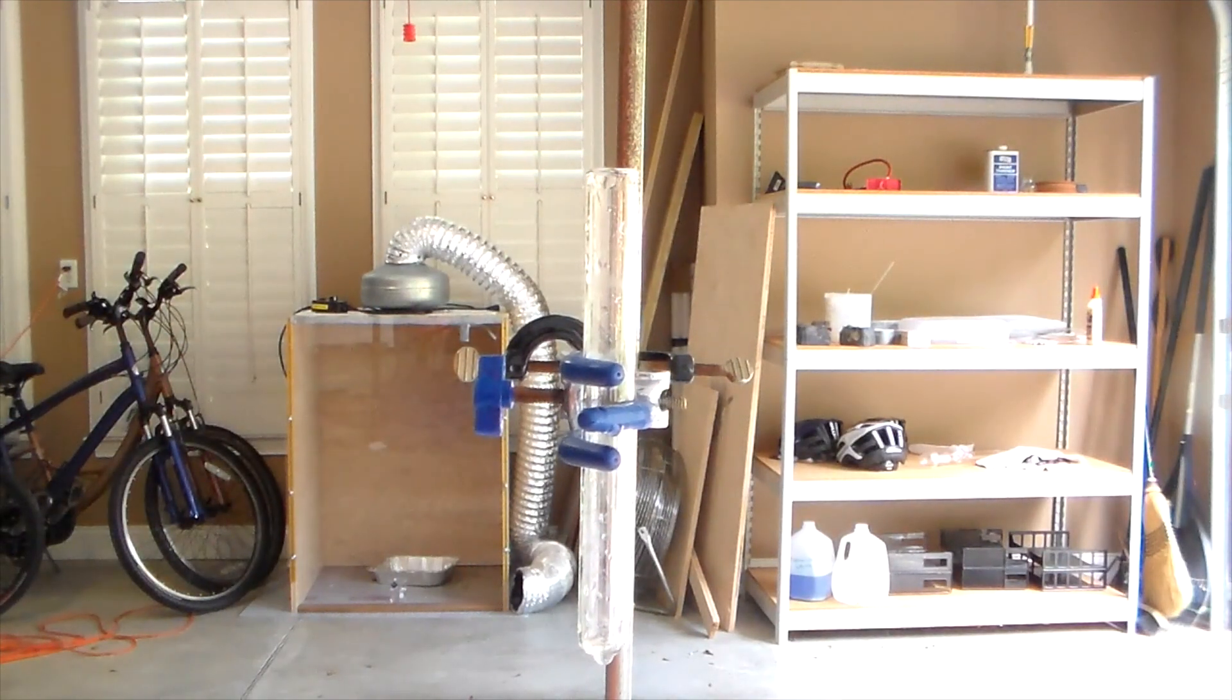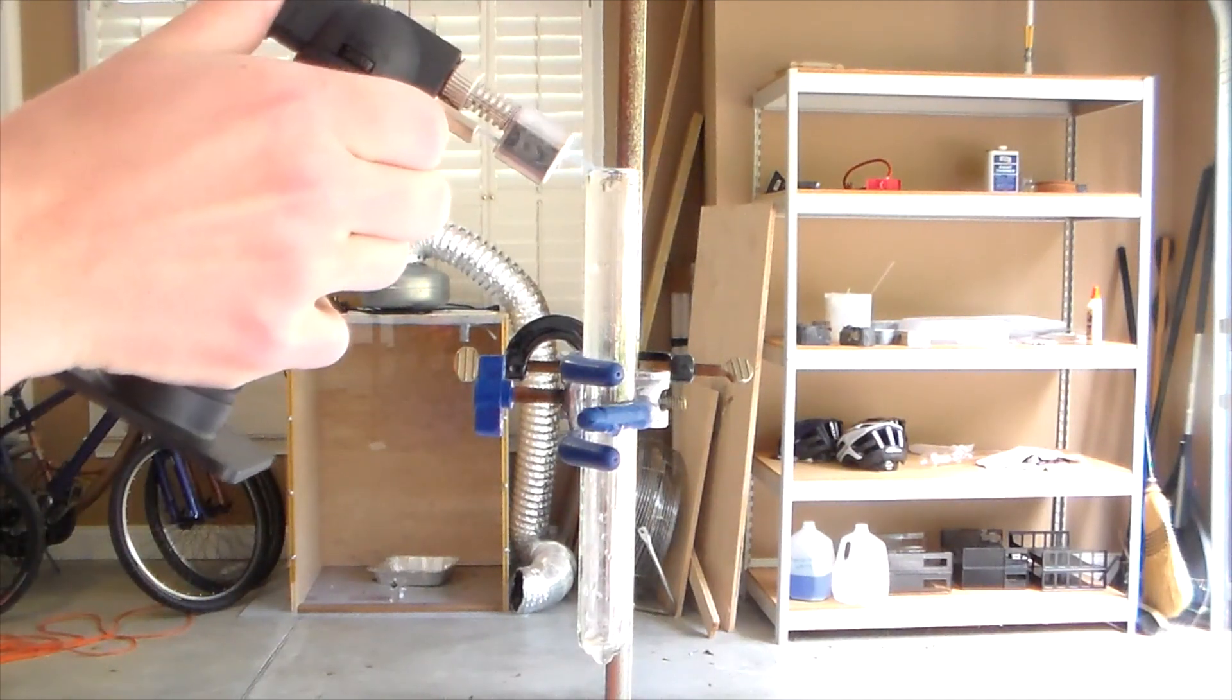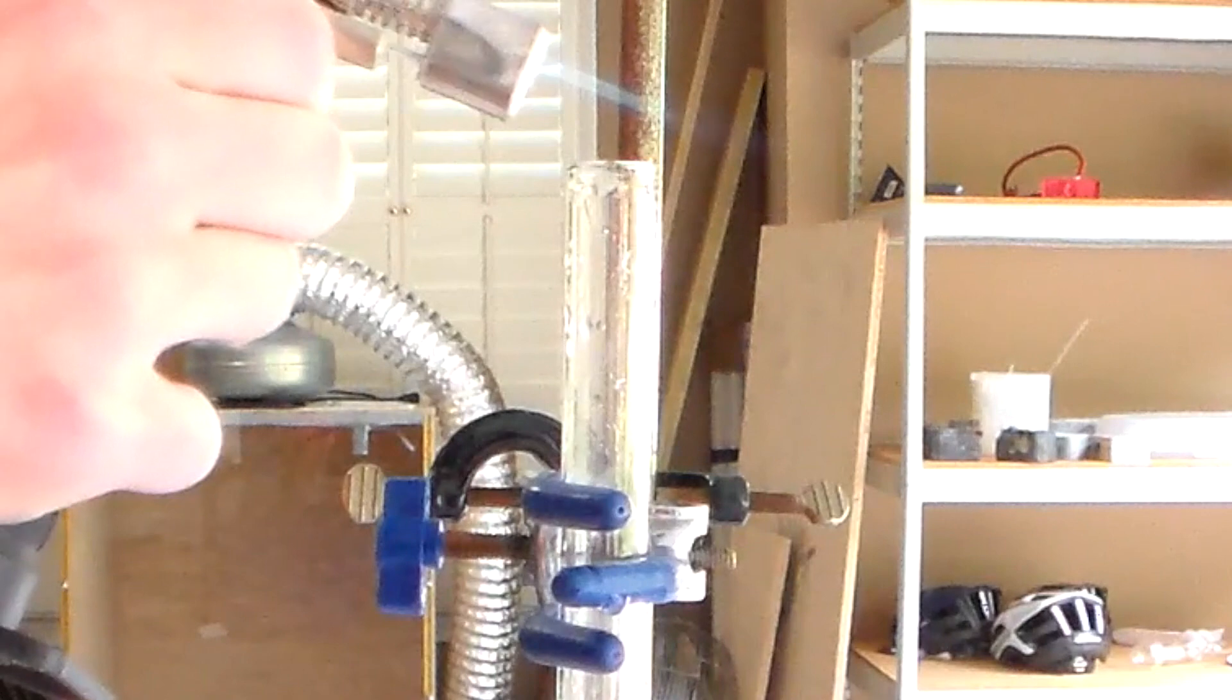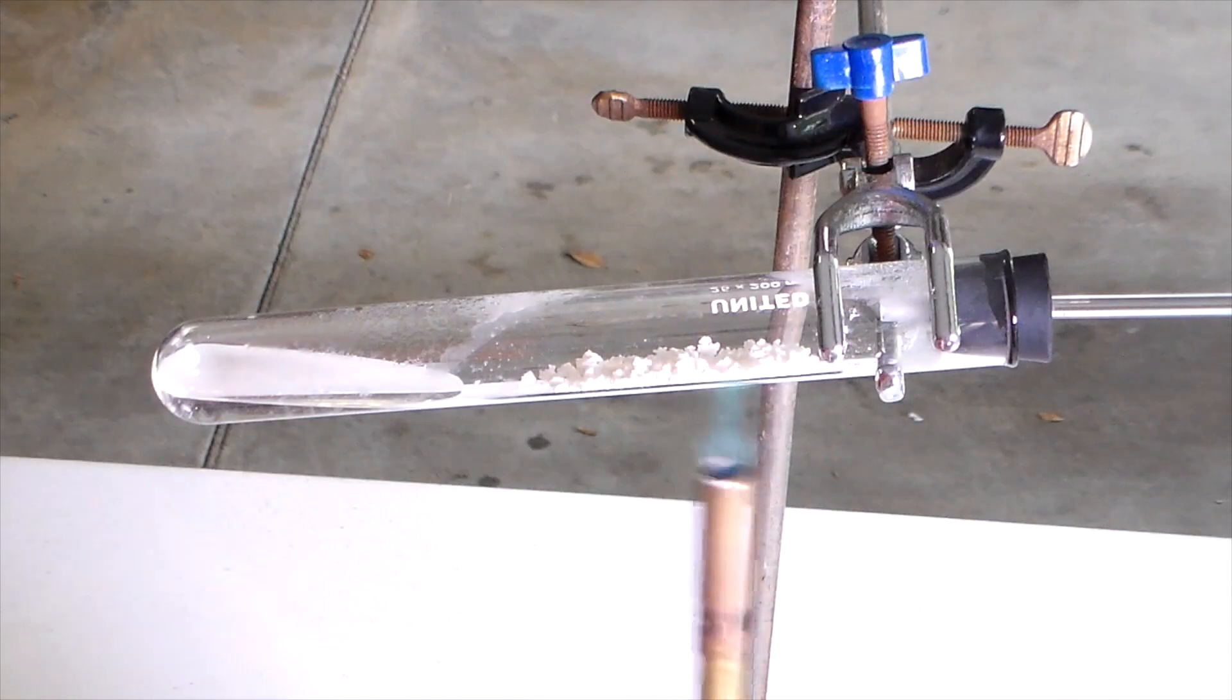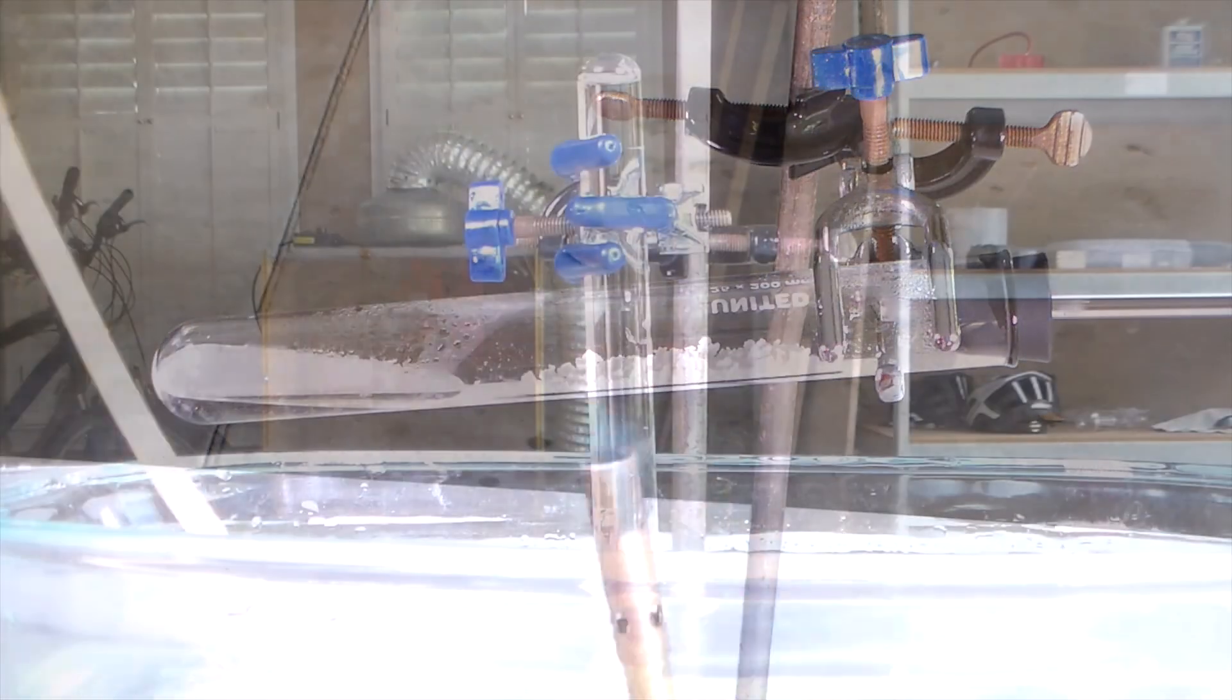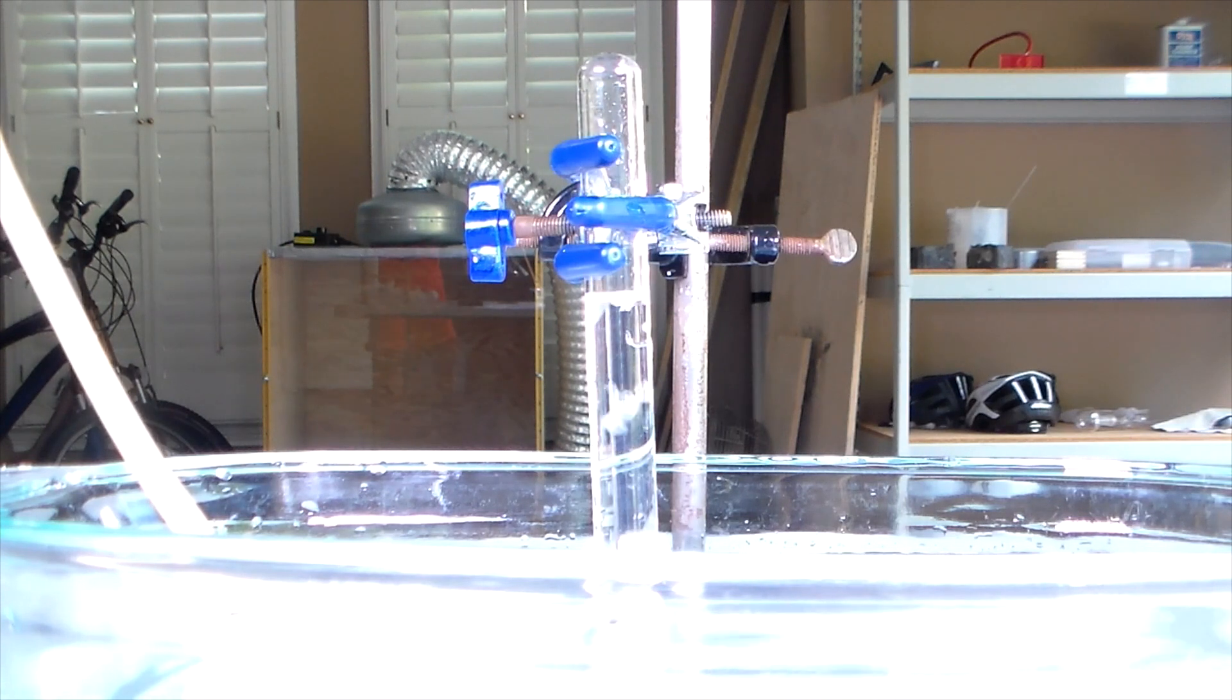Anyway, we can show that we've made a flammable hydrocarbon by testing for flammability. I did this experiment again and collected another test tube full of ethene.